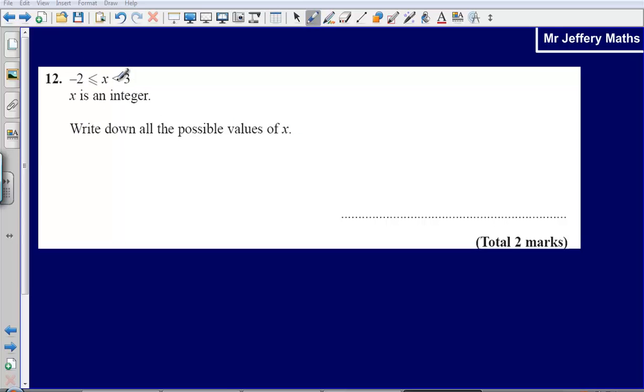So we're given these set of symbols up here, we need to know what these mean. This symbol here means that x is greater than, and that line there means that it could also be equal to minus 2. So x is greater than or equal to minus 2.